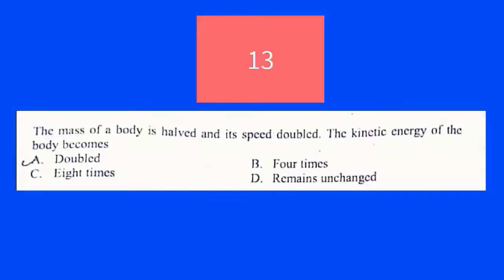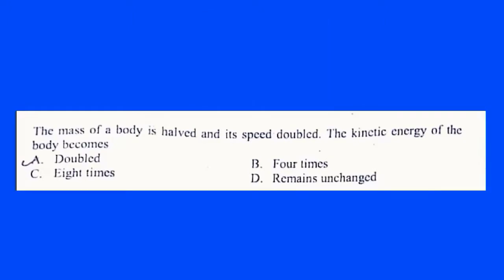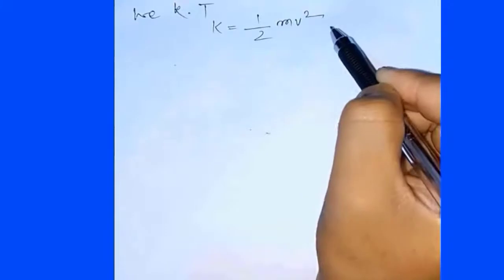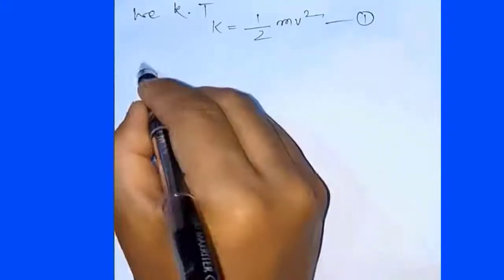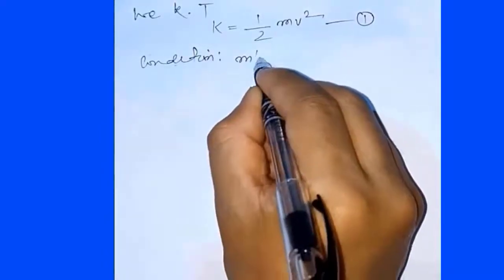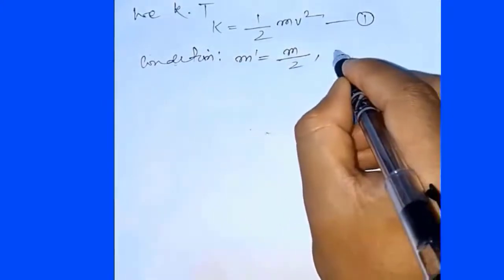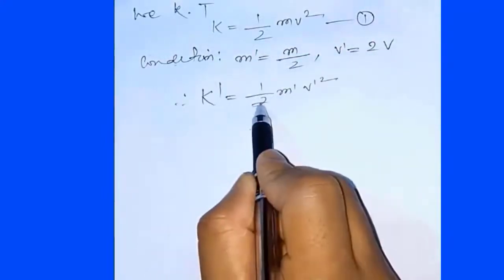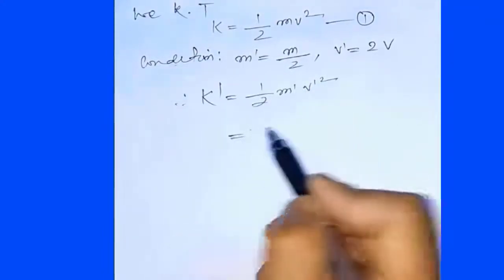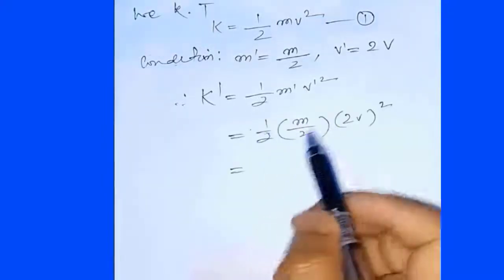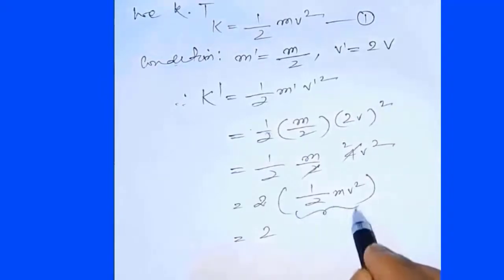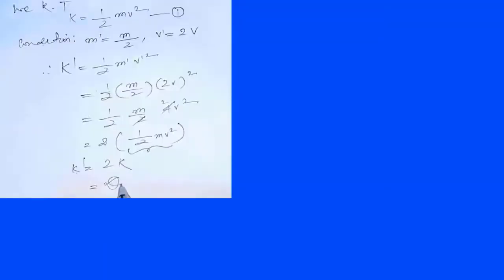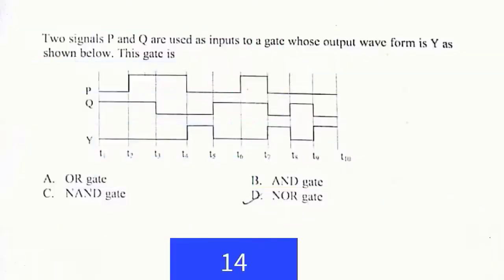In this question, we have a mass of a body that is halved and its speed is doubled. We have to find the new kinetic energy. We know kinetic energy is (1/2)mv squared. The new mass is m/2 and the new velocity is 2v. Therefore, the new kinetic energy K prime equals (1/2)(m/2)(2v) squared equals (1/2)(m/2)(4v squared) equals (1/2)(2mv squared) equals 2 times (1/2)mv squared equals 2K. The new kinetic energy is double the original kinetic energy.